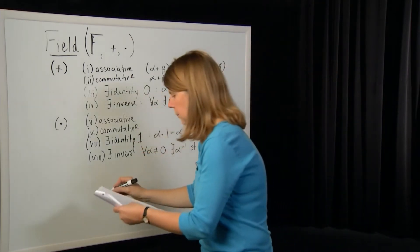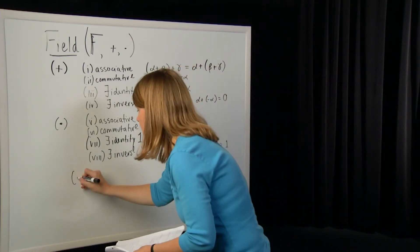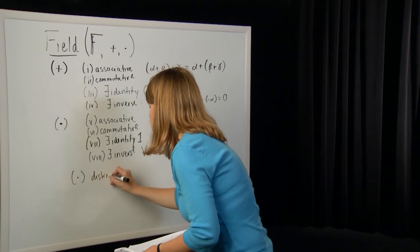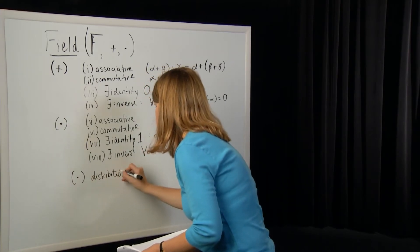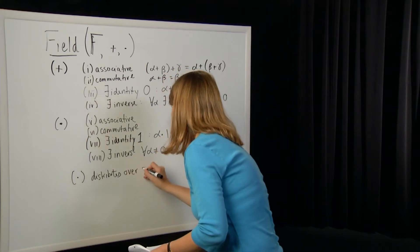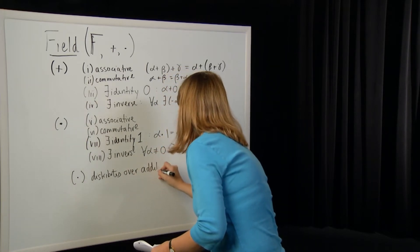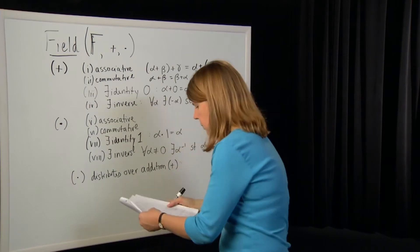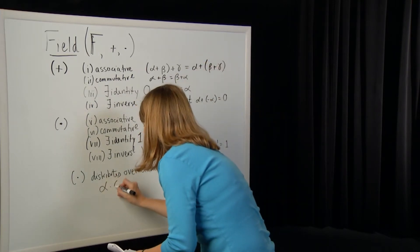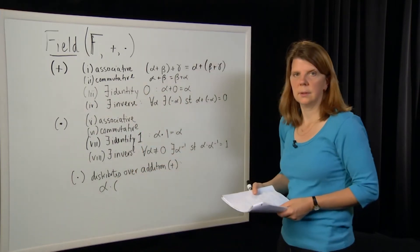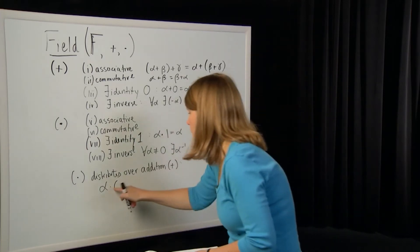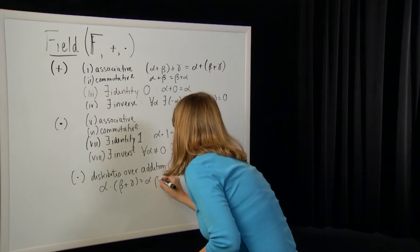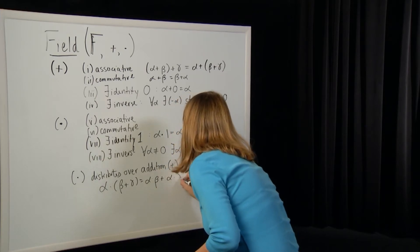And finally we combine these two rules: multiplication distributes over addition. That means that if you have three elements alpha, beta, and gamma in the field, then alpha times (beta plus gamma) is equal to alpha times beta plus alpha times gamma.